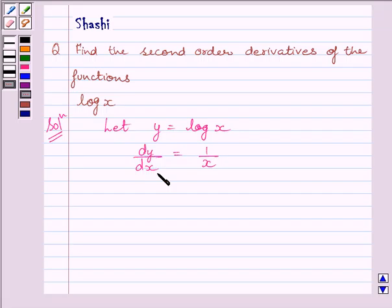Again, differentiating both sides of this equation with respect to x, we get d squared y upon dx squared is equal to minus 1 upon x squared.